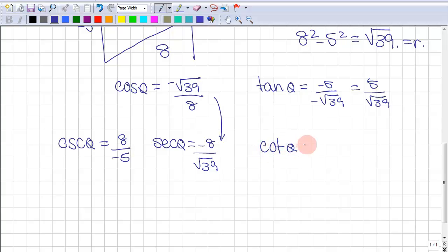Cotangent theta will equal root 39 over 5. That's the reciprocal. And that's all you have to do.